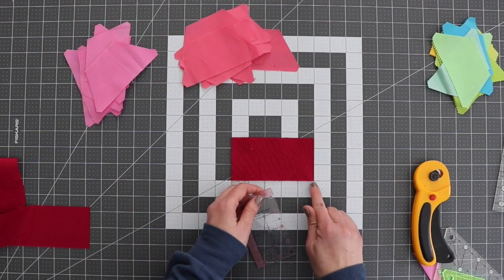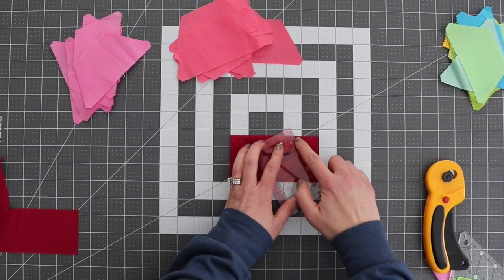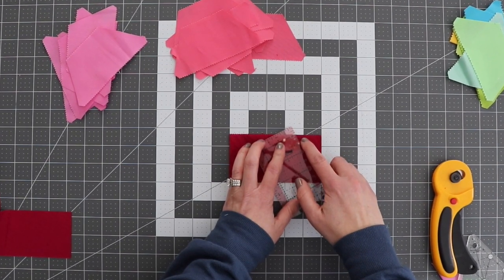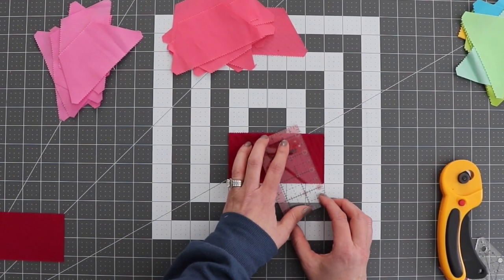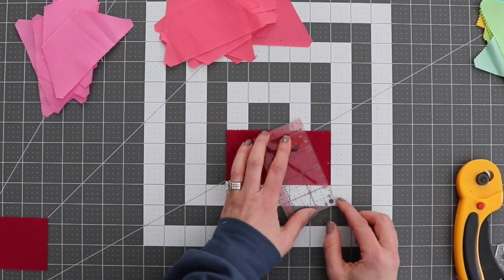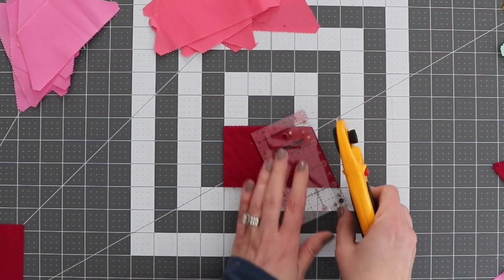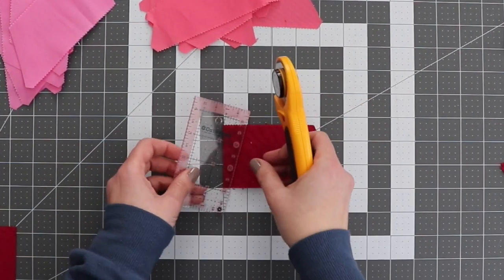We're going to measure one and one quarter inch at the top from the bottom corner. So I'm just going to take my ruler, I'm going to make sure I can see the markings on the mat below. I'm going to line that up with the one and one quarter inch, go from the very bottom corner here, and I'm just going to cut that off. Same thing on the other side.